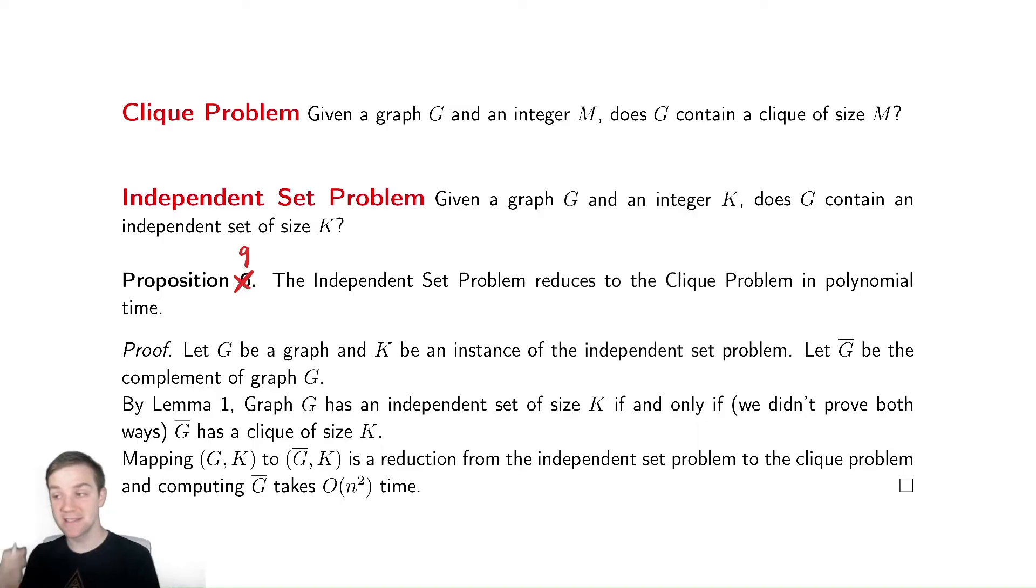So we have an instance of the independent set problem. What we're going to do is by lemma 1, we know for a fact that graph G has an independent set of size K if and only if G bar has a clique of size K. That was our lemma that we proved. Having proven that lemma, we know that if we map G and K to G bar and K, we take G and replace it with G bar, that we can find an independent set of GK if and only if we can find a clique in G bar. And the sizes are the same.